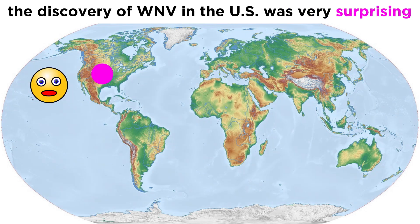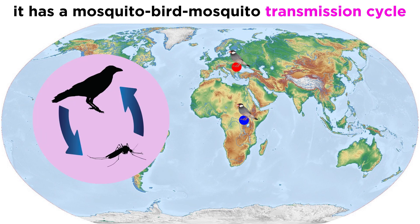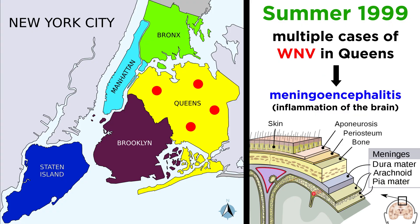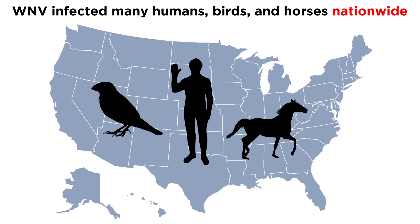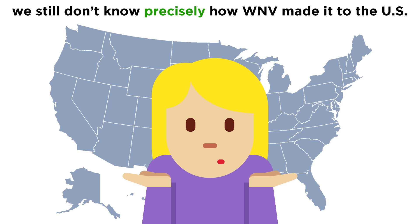That's why the discovery of West Nile virus in the United States was very surprising. When the virus appeared in Romania in the mid-1990s, experts could explain the jump by examining bird migration between Africa and Europe. Birds are the natural reservoir for West Nile, after all, and the virus is maintained by a mosquito-bird-mosquito transmission cycle. It was completely unexpected for the virus to jump across the Atlantic Ocean and show up in New York City of all places. A cluster of cases popped up in Queens in the summer of 1999, causing severe meningoencephalitis, or inflammation of the brain. From there, the virus spread to ten other states, infecting humans, birds, and a surprisingly large number of horses. The largest outbreak of West Nile ever recorded happened in 2002, when the virus spread all the way across the United States and into Canada. Even though scientists have done significant investigations and analyses to figure out exactly how the virus spread to the US, we still don't know for sure how it happened.